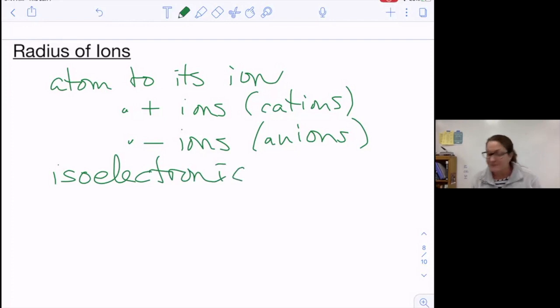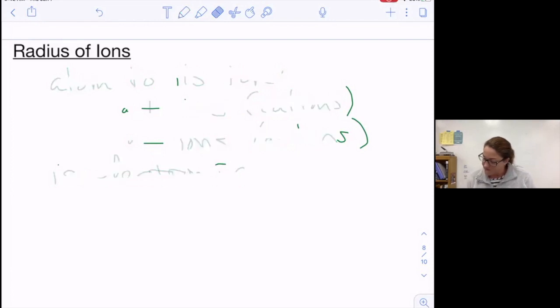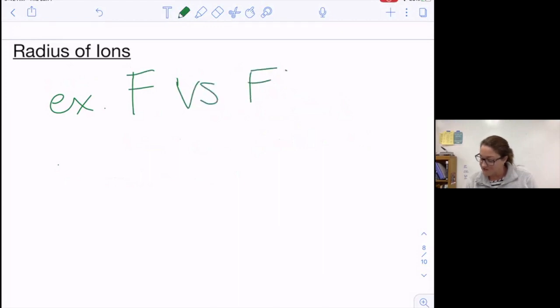If I'm comparing an atom to its ion, let's look at our first example. Our first example that we're going to look at is, let's consider for example F versus F minus one.